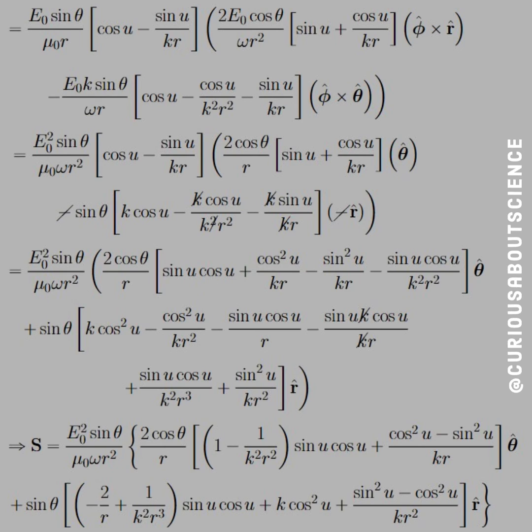So we have to distribute that bracket of cos u and sin u / kr into everything. So then our Poynting vector is E₀² sin θ / μ₀ωr in curly brackets with all that nonsense in the theta direction and sin θ times the brackets in the r̂ direction. Okay, now let's make a couple more notes. That way we don't have to sit there and set up a thousand integrals.